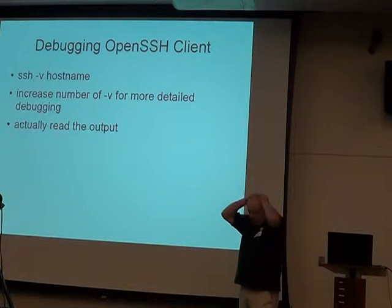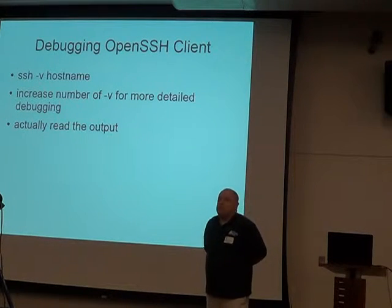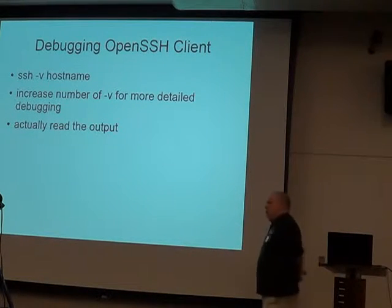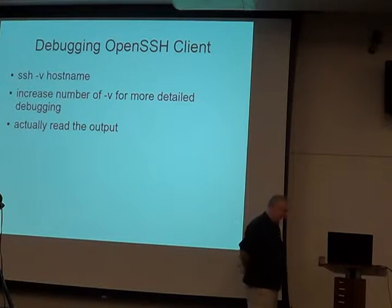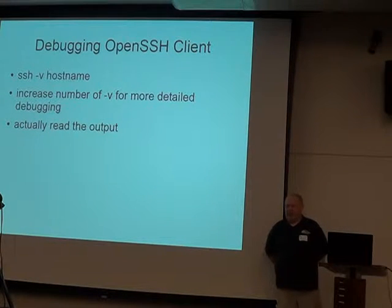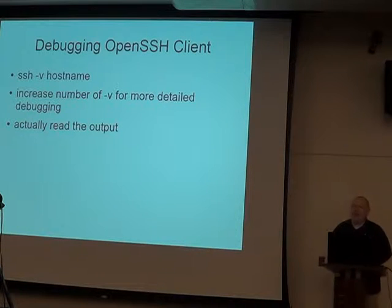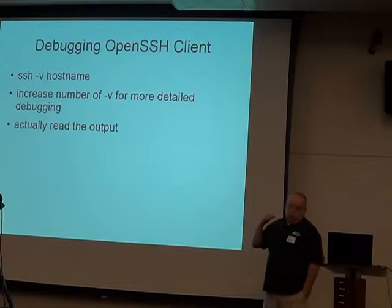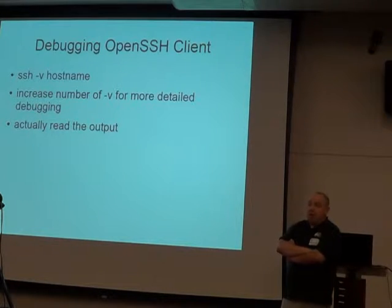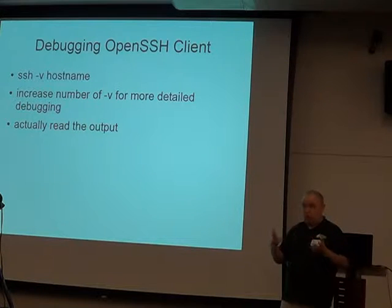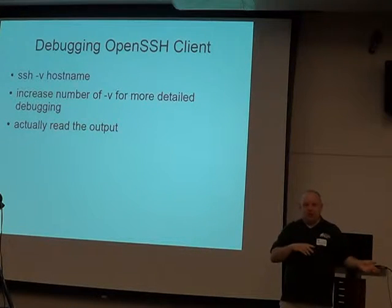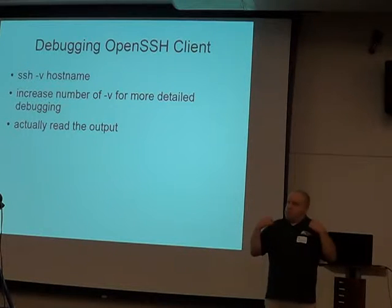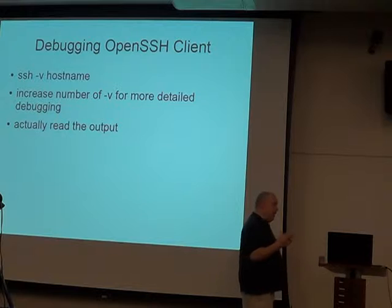Let's talk about OpenSSH as the client. Every so often OpenSSH doesn't do what you think it should. You scream and wail, go running for Stack Exchange, read the man page, check the book — and it's not in there either. So how do you find out what's going on? SSH -v, verbose mode, will print the debugging information for your client to the screen intermixed with your session. If you actually read the output, it will tell you things, and usually you can figure out why you're not connecting.